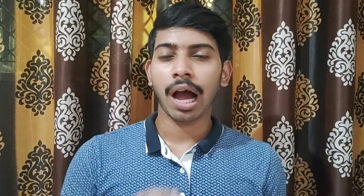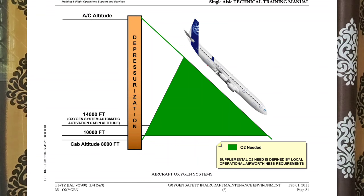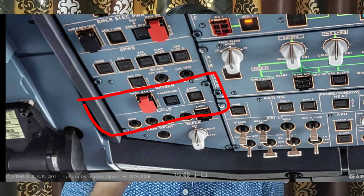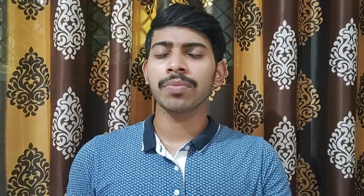Masks can also be selected for manual deployment. In some cases there is also a special release tool that can be used by cabin crew to unhook the PSU unit storage box and deploy the masks manually — in the rare condition that somehow a mask doesn't come down on its own.